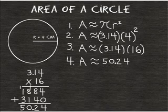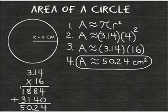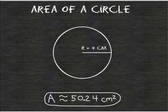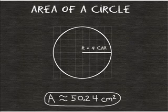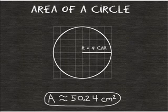Now, what does this really mean? It means that inside the perimeter of this circle, we could cover the surface of the circle with about 50 square centimeters. To illustrate this, we are going to overlay a square units grid over the circle just to show that it is about 50 square centimeters.